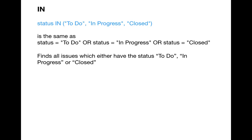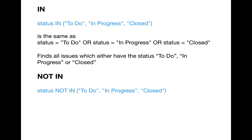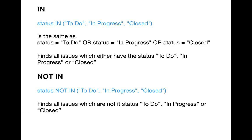The next keyword is NOT IN, which is the reverse of IN. For example, if you're looking for all issues in project ABC which are not closed or not in progress, you write: status NOT IN (In Progress, Closed). This will list all the issues which are not in those statuses and will return issues with any other status apart from the ones specified.